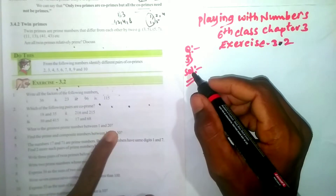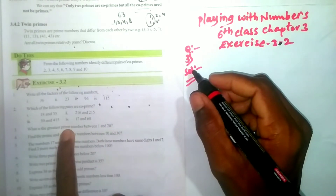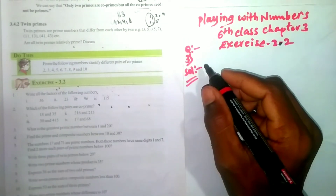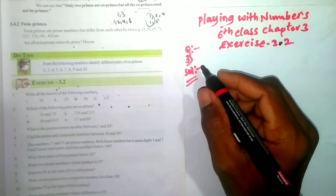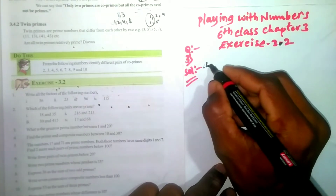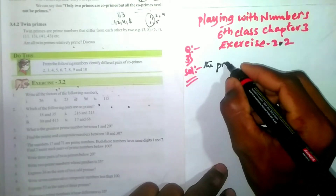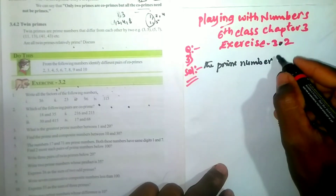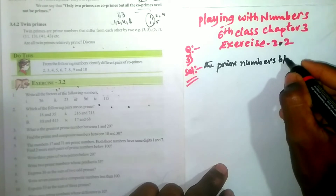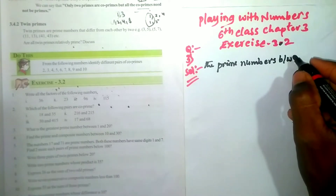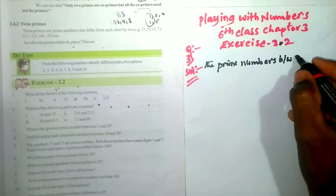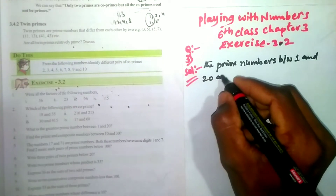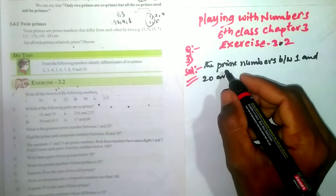Okay, in 1 and 20, we will find the greatest prime number. So, we will write down the explanation here. The prime numbers between 1 and 20 — we will find out the prime numbers between 1 and 20.